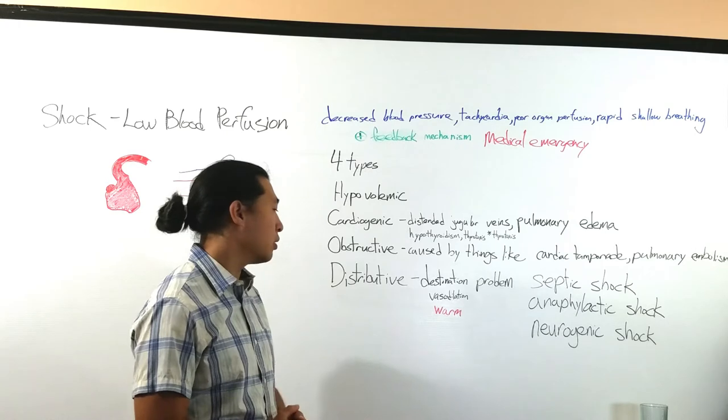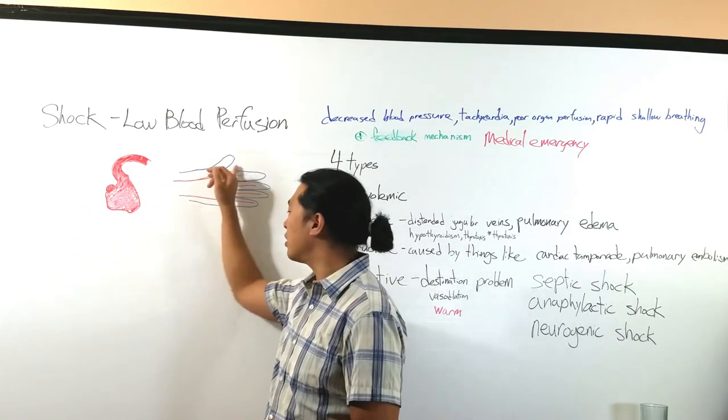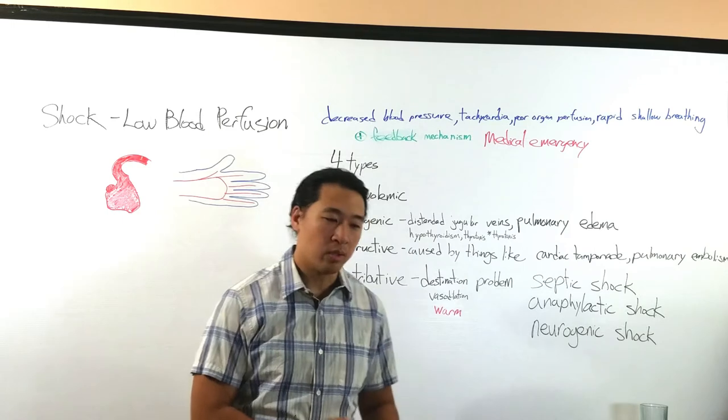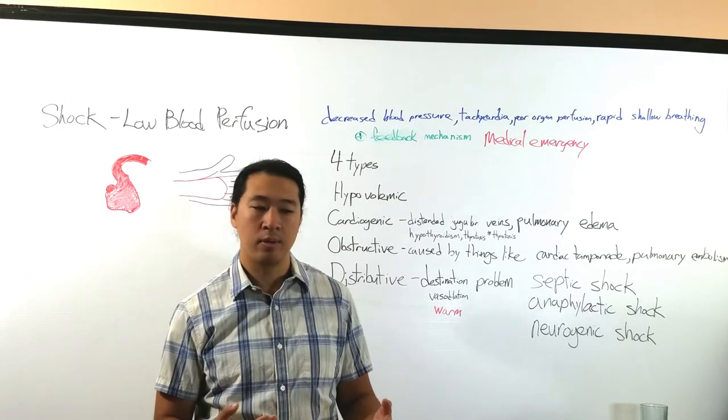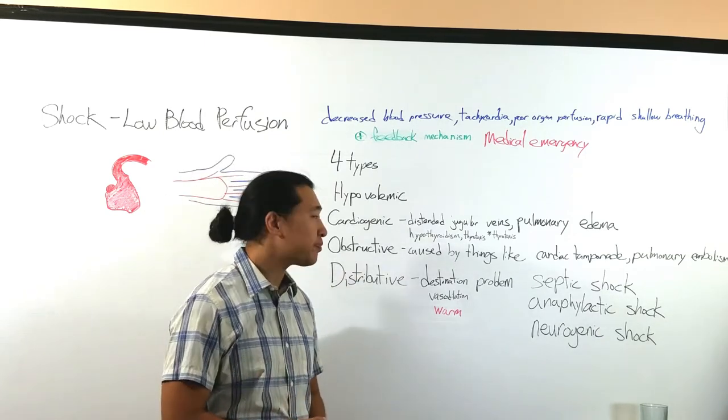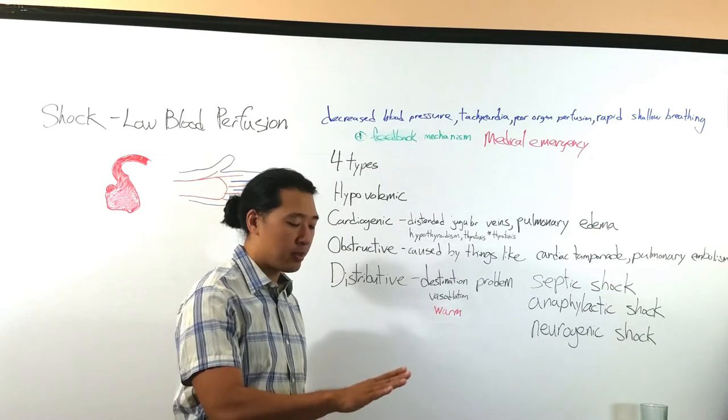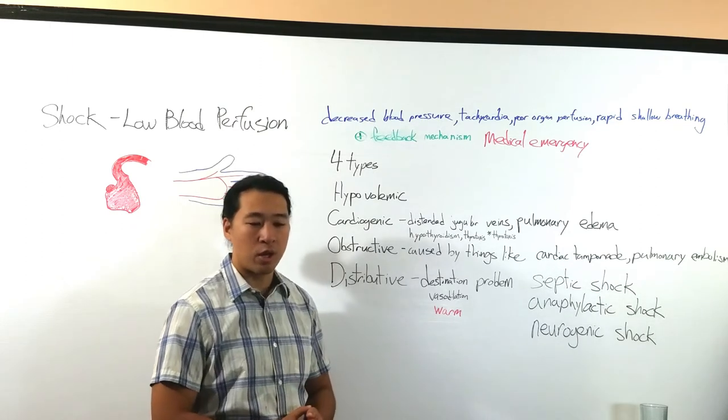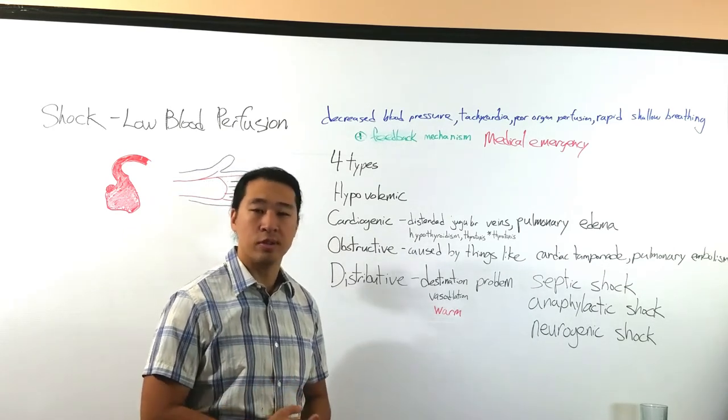Now, the last thing we're going to talk about is something called distributive shock. And in distributive shock, this is the problem not with the blood, not with the heart, but actually of the organ itself. So let's suppose that something is going on with these cells here where they can't really use oxygen. They can't really use the respiratory procedures that would end up using, that would allow the blood to perfuse into the area correctly and supply the tissue correctly. It's actually at the end site. So like I said, it's a destination problem.